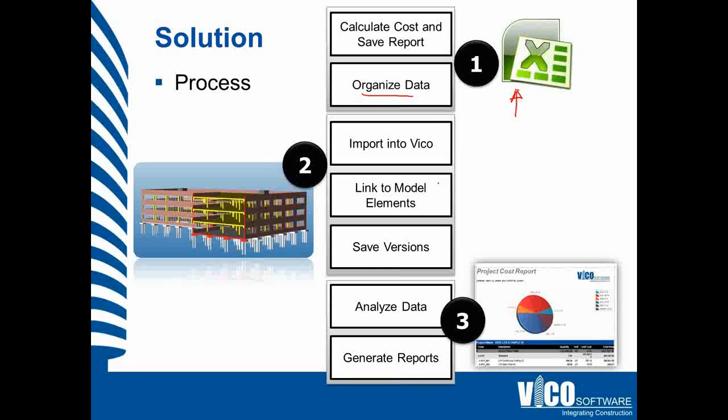That will then allow us to link model elements to the existing line items. While doing that, we'll save versions on the timeline. Each of the versions will then allow for doing comparisons and seeing what the differences are between model-based quantities and manual quantities, and also between the various versions of the Timberline and MC squared outputs.